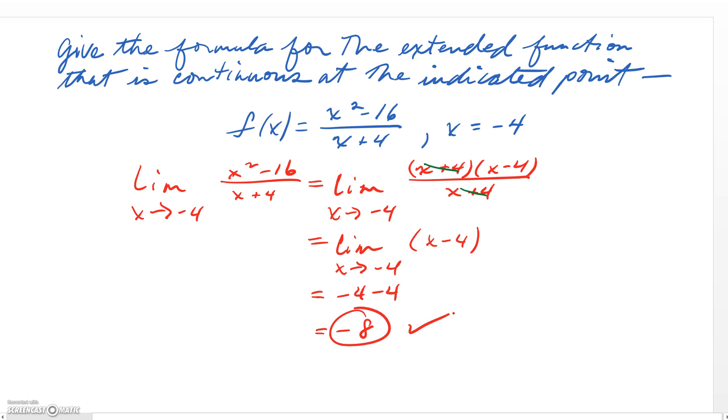That is the value at the hole, and we're going to use this value to build an extended function that's continuous at x equals negative 4 in just a moment.